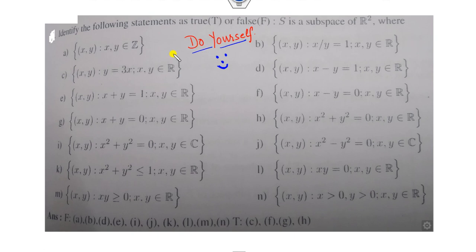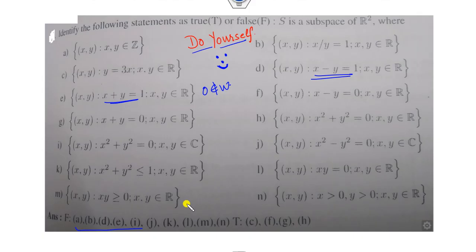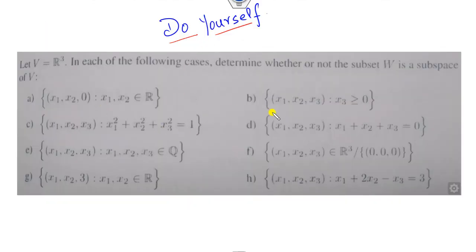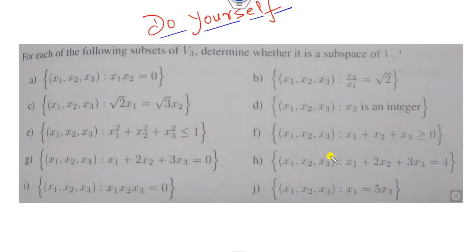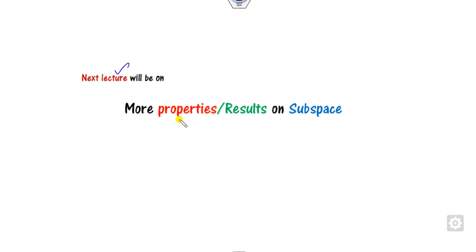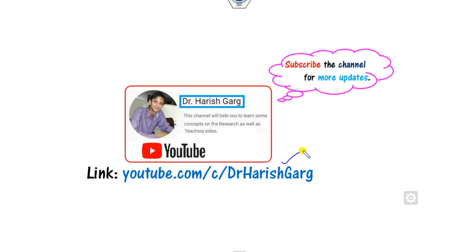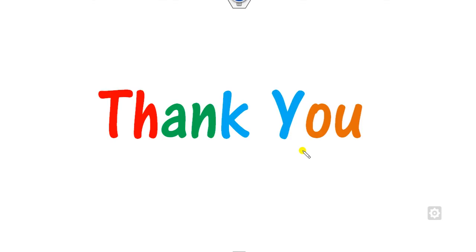Here are some exercises for you to try. You can verify that some sets are not subspaces because the zero vector does not belong to them. Answers are provided for several problems. For more videos and the next lecture on further properties and results of subspaces, such as intersections, please subscribe to this channel and share this video with your friends. Best of luck, students!